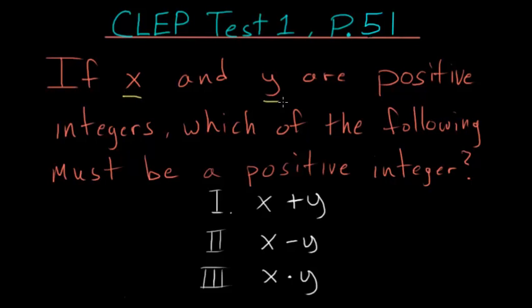If x and y are positive integers, which of the following must be a positive integer? x plus y, x minus y, or x times y.